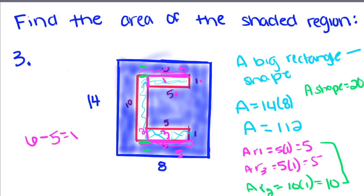Now in order to find the shaded area, or the area of the shaded region, I'm going to take this big area minus this little area. So 112 minus 20 will give us 92. So that's the area of the shaded region.